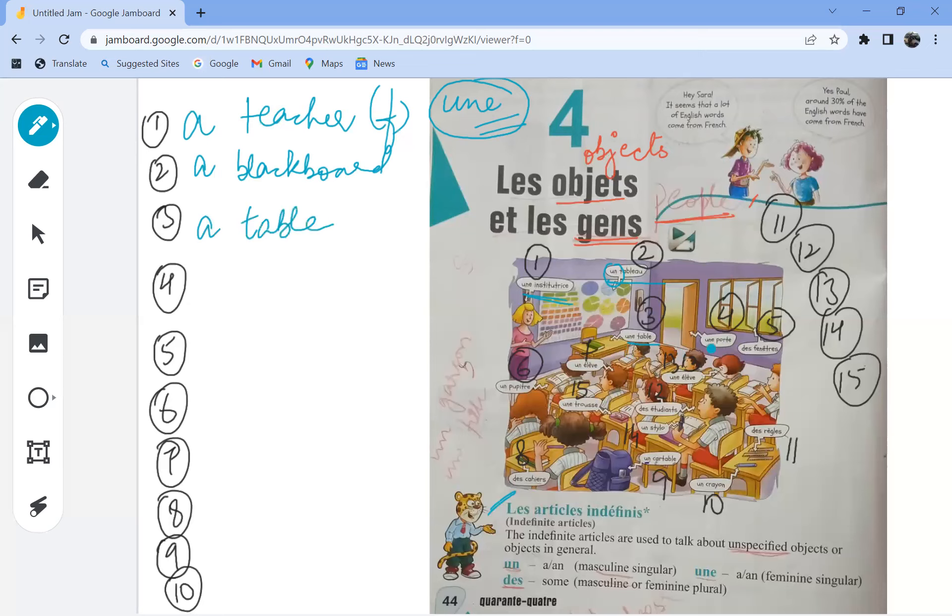Number four, une porte is a door which is again feminine. You must remember the nouns as well as the article being used, because in this chapter we'll be doing adjectives also, and in French the adjectives are changed according to the number of the noun and the gender of the noun. So it will be helpful for you if you try to remember the gender of these nouns.